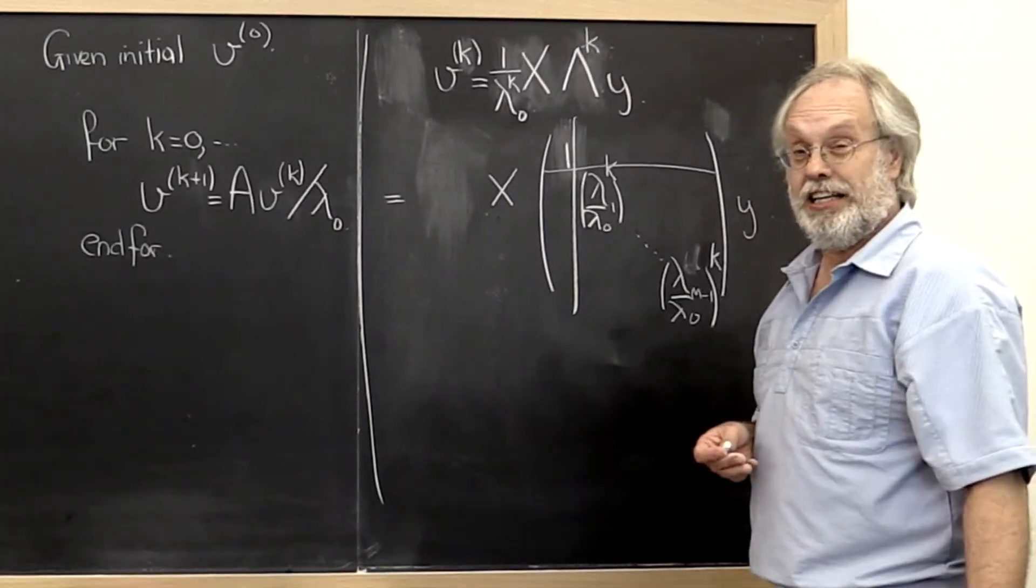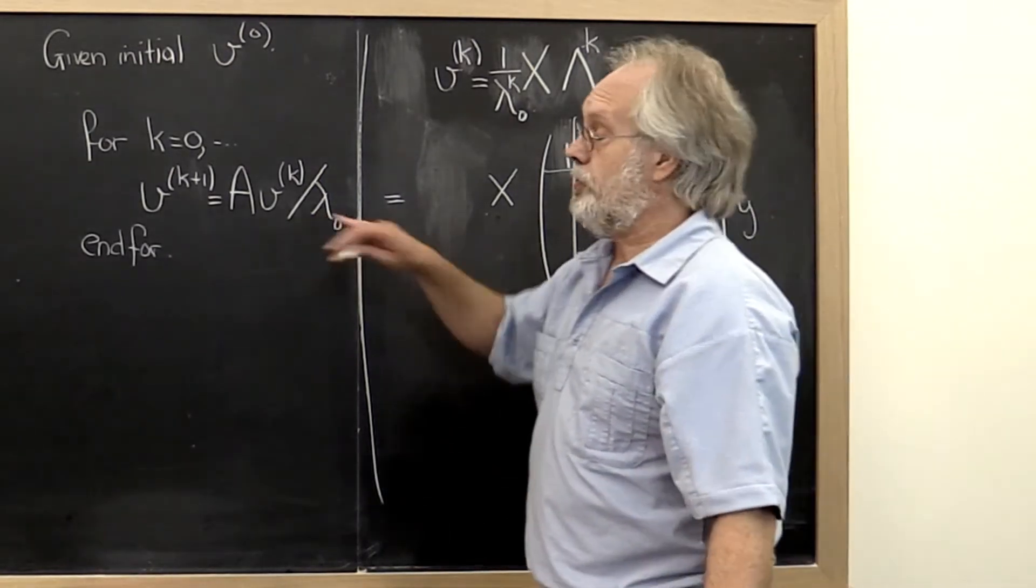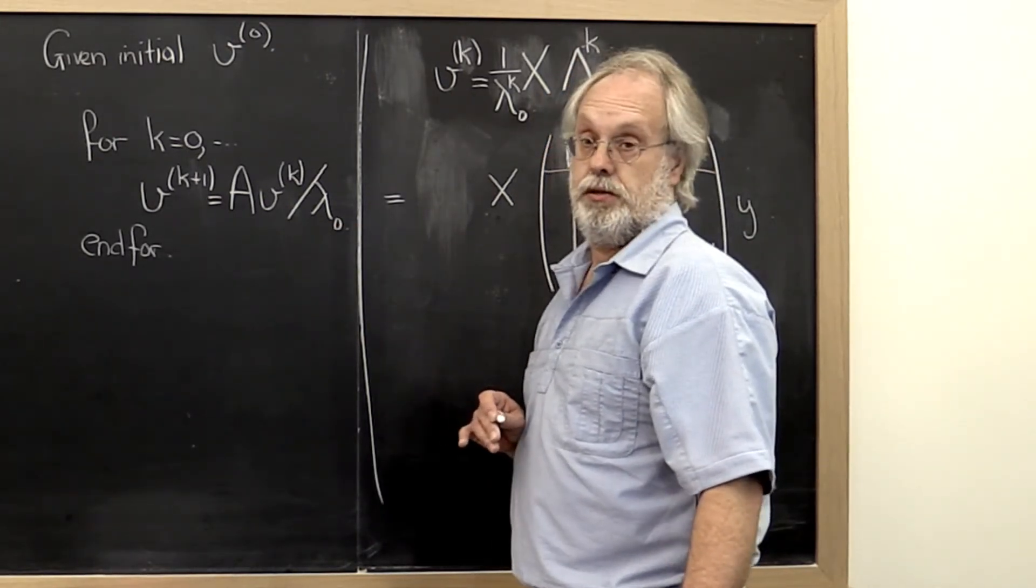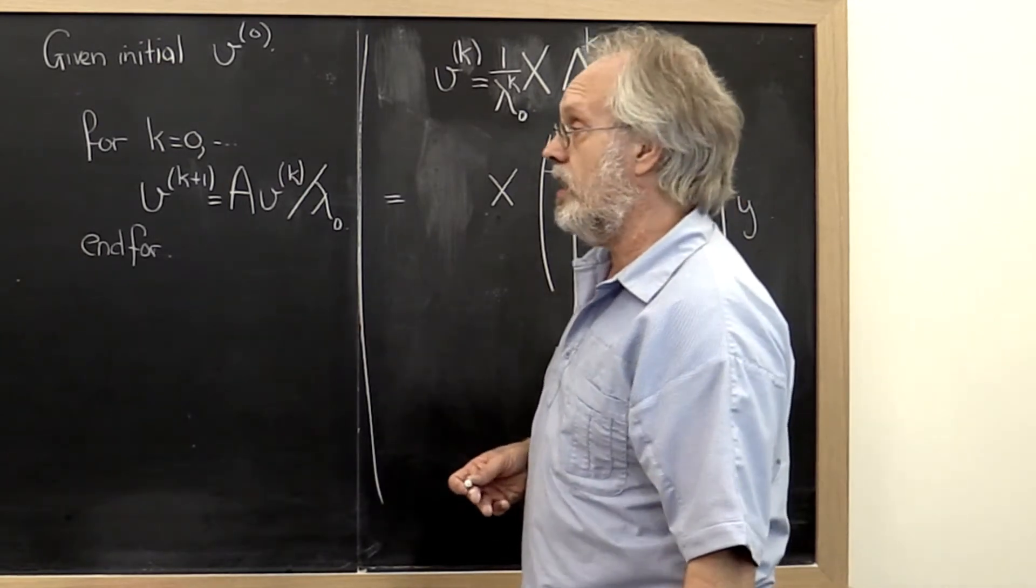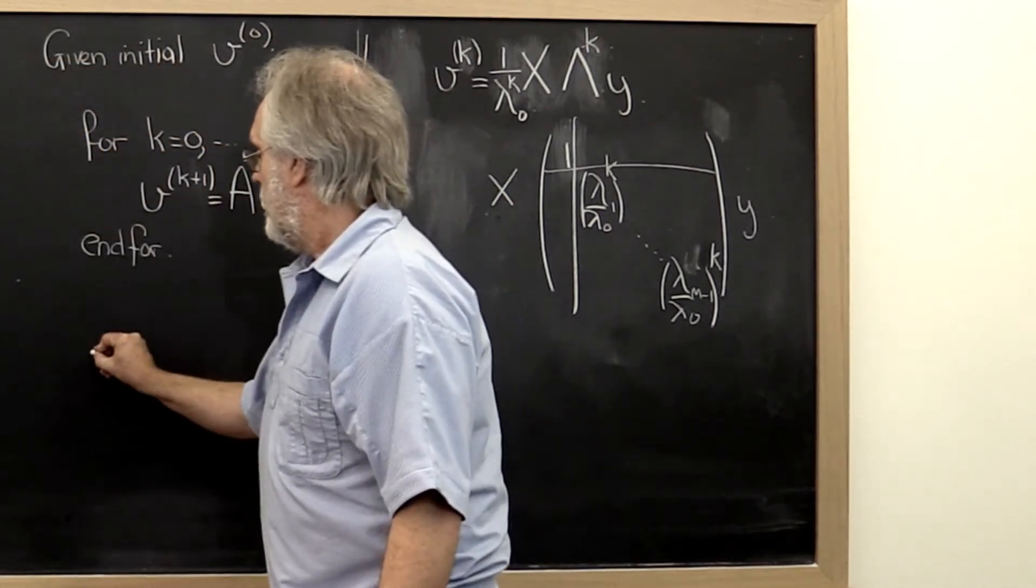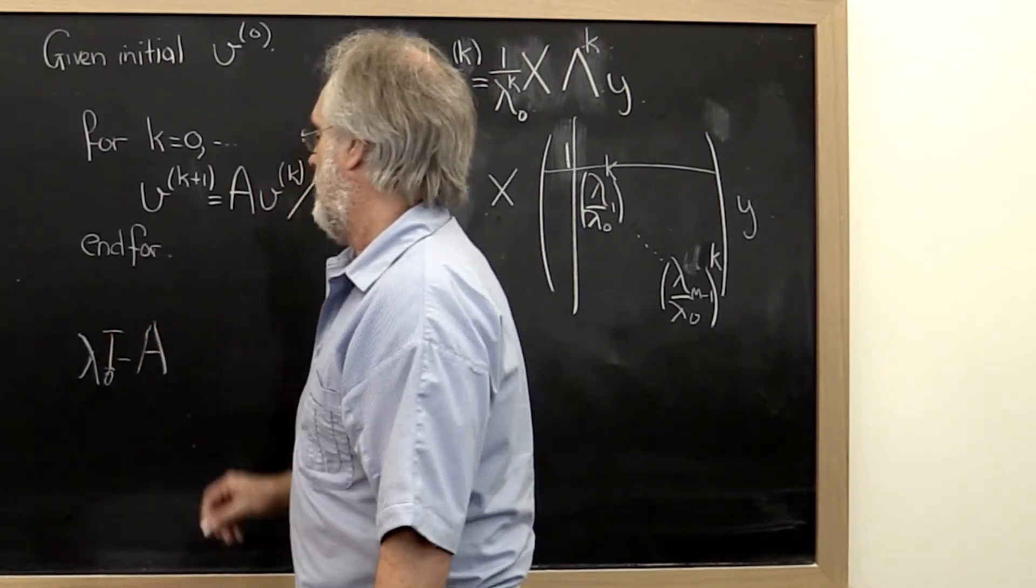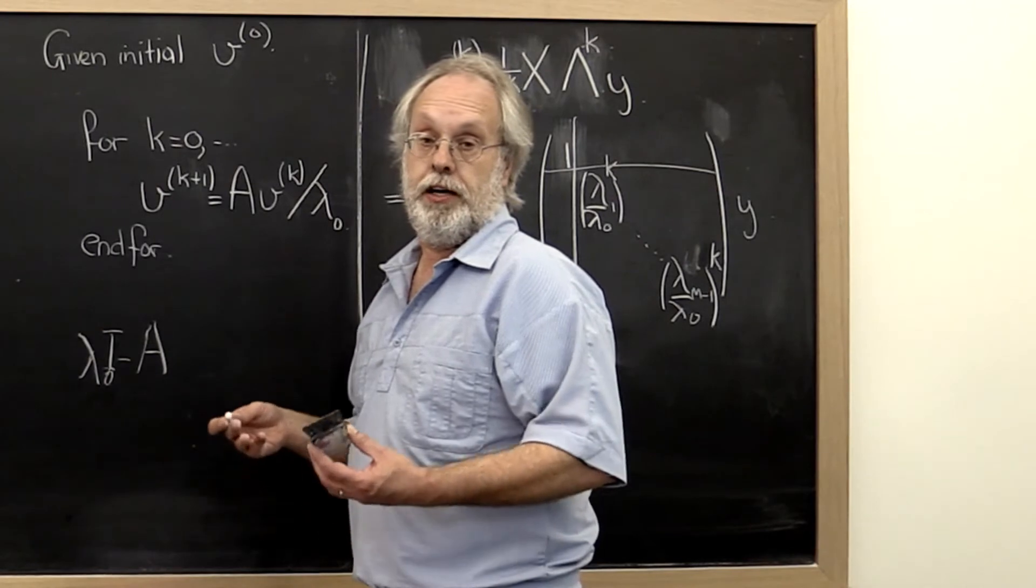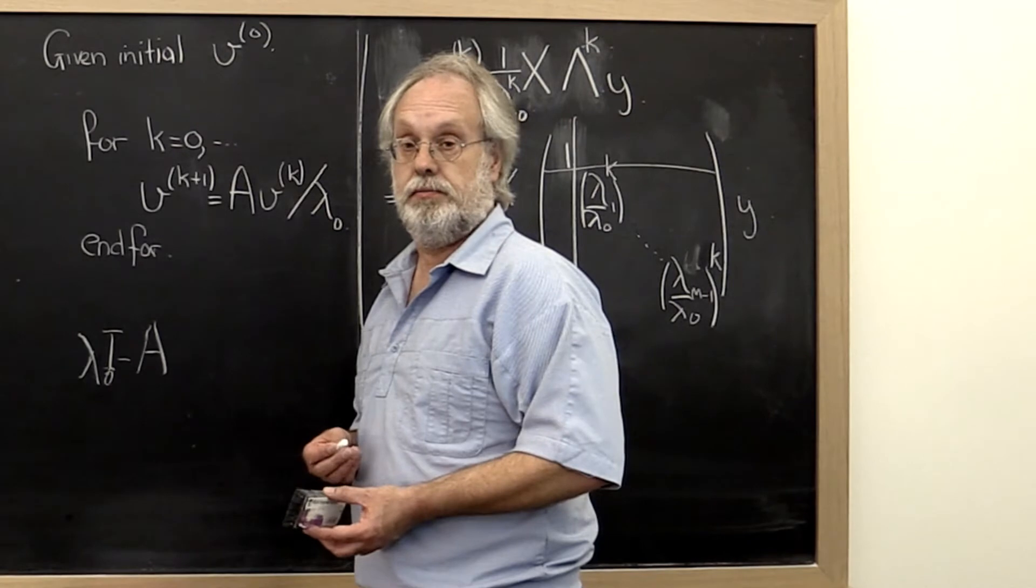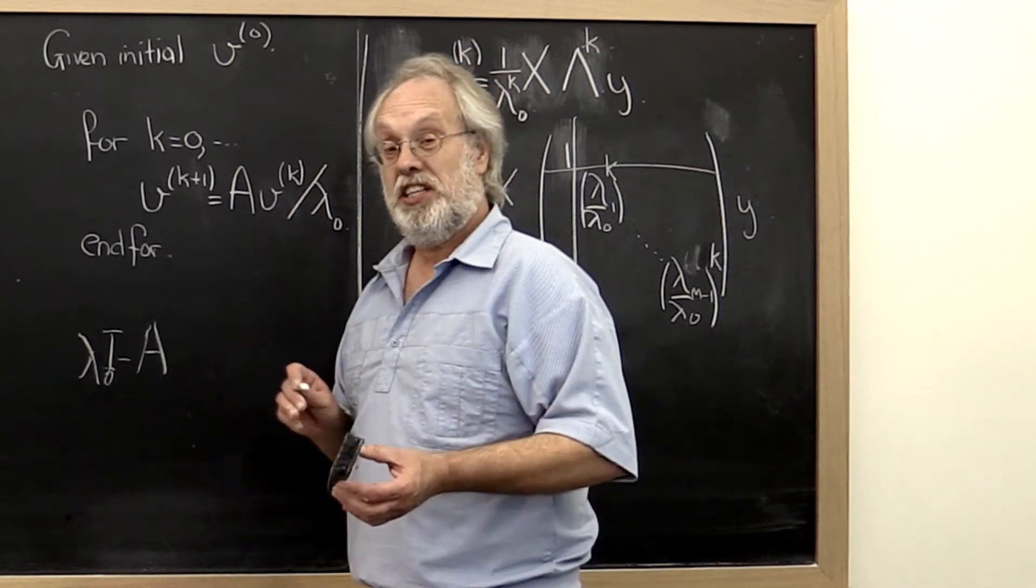Now obviously we've got a little bit of a problem here, right? We're cheating. In order to do this, we would have to know what our eigenvalue is. However, if we knew what our eigenvalue was, then we could subtract that from the diagonal of A or we could form lambda zero times the identity minus A. And then we could compute a vector in its null space and we would have our eigenvector. So that's probably cheating then, right?